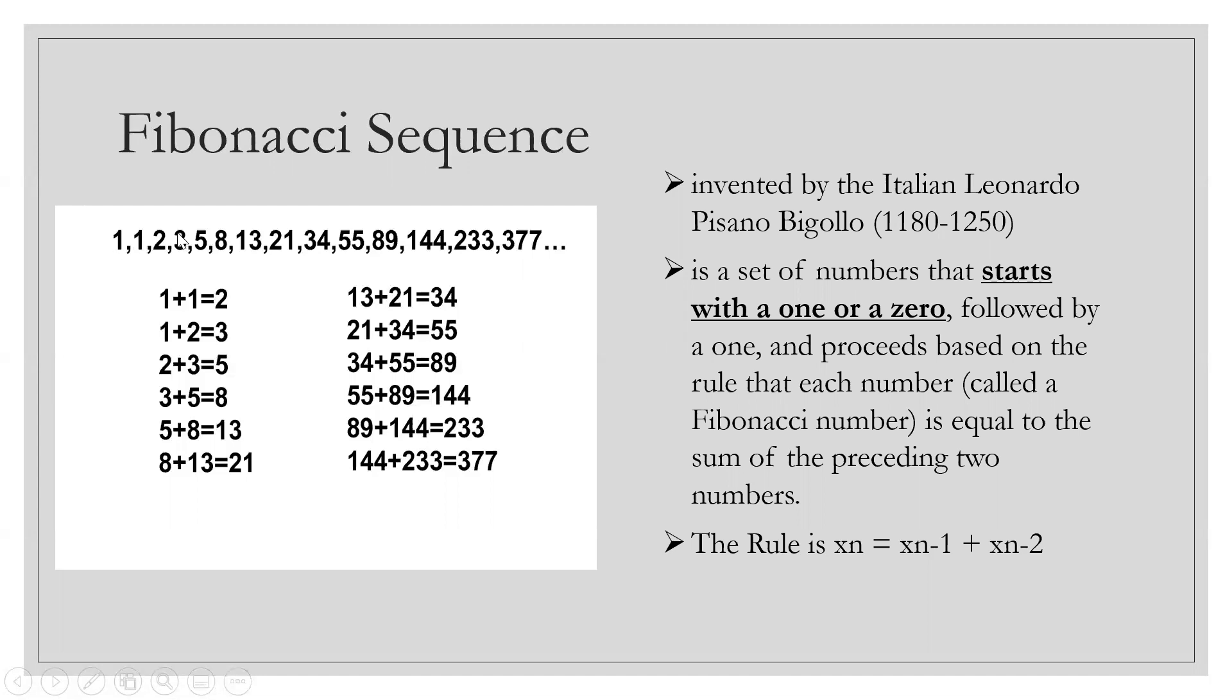To get the next number in the sequence, we just need to add. 1 plus 1 is 2. To get 3, the next number, just add 1 and 2 to get 3. 2 plus 3 is 5, 3 plus 5 is 8, 8 plus 5 is 13. For example, 144 plus 233 is 377. That is the Fibonacci sequence.